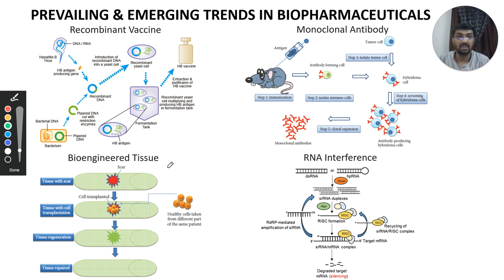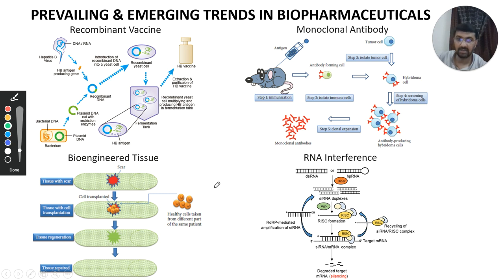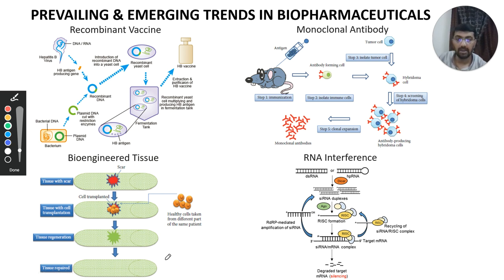Another emerging technique is bioengineered tissues. A scar or damaged tissue could be repaired with healthy cells taken from different parts of the same patient — this is called autologous replacement of cells. Those cells should regenerate and repair the damaged area, and this type of work is underway in trials.